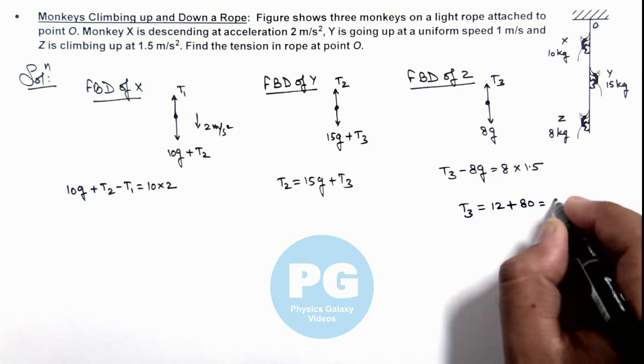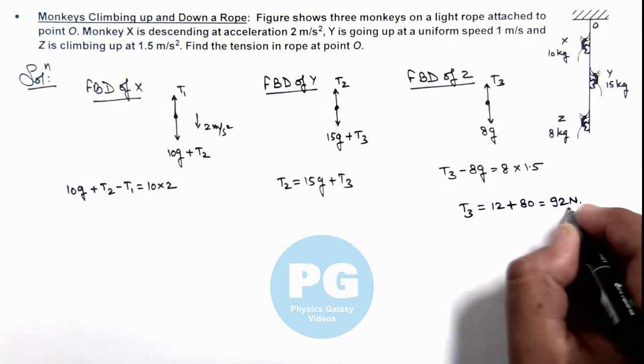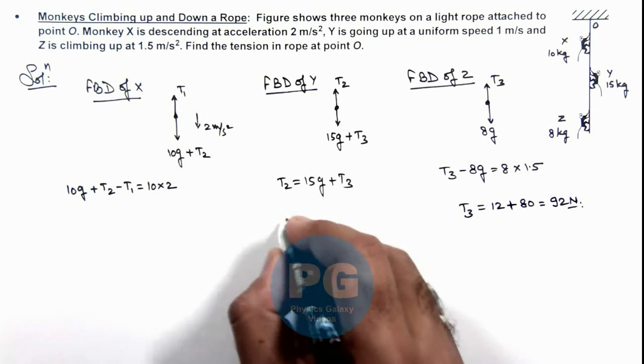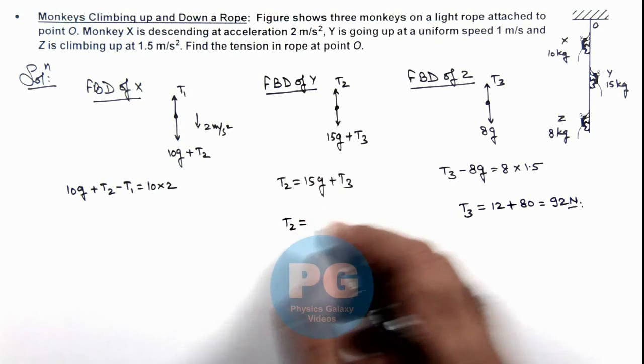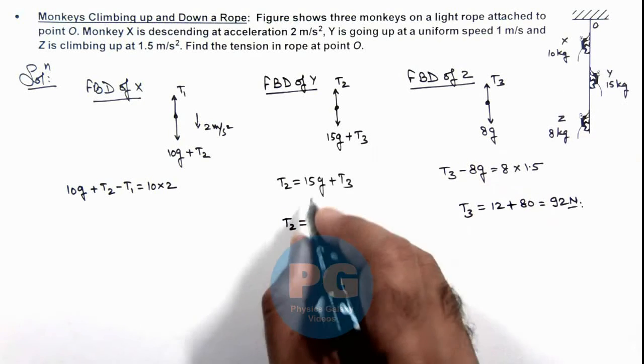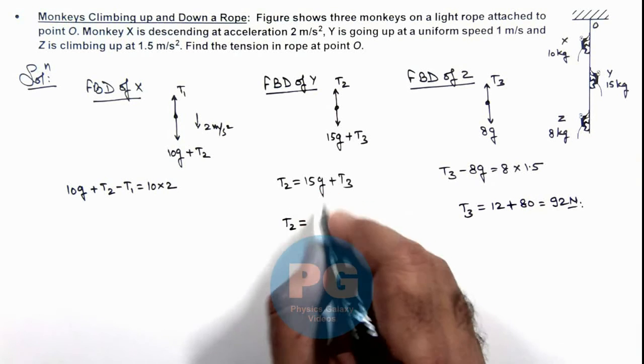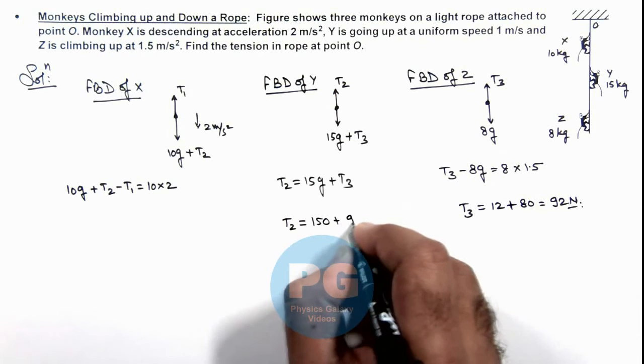The value of T3 we are getting is 92 Newtons. If we substitute the value of this part of the string which can be written as 15g is 150 plus T3 is 92.